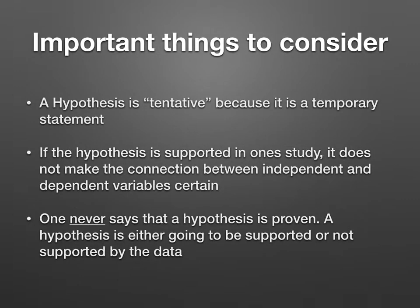A couple of important things to consider. One, a hypothesis is tentative because it's temporary. If a hypothesis is supported in one study, it does not make the connection between independent and dependent variables certain. That's why you never say it's proven. One never says that a hypothesis is proven — it's either going to be supported or not supported by the data. When you write it in your paper, always say 'support.'